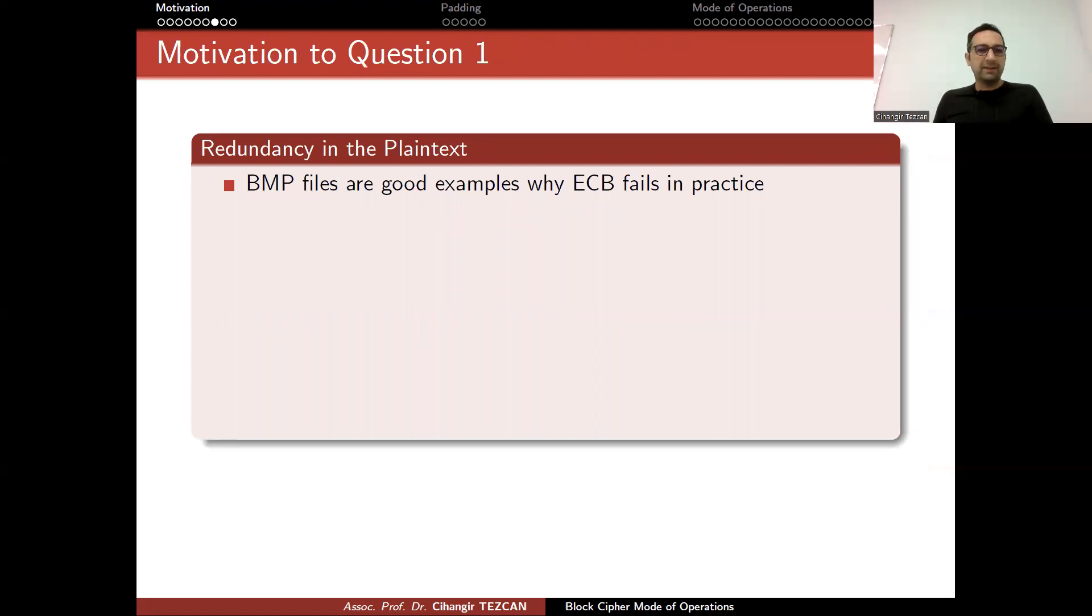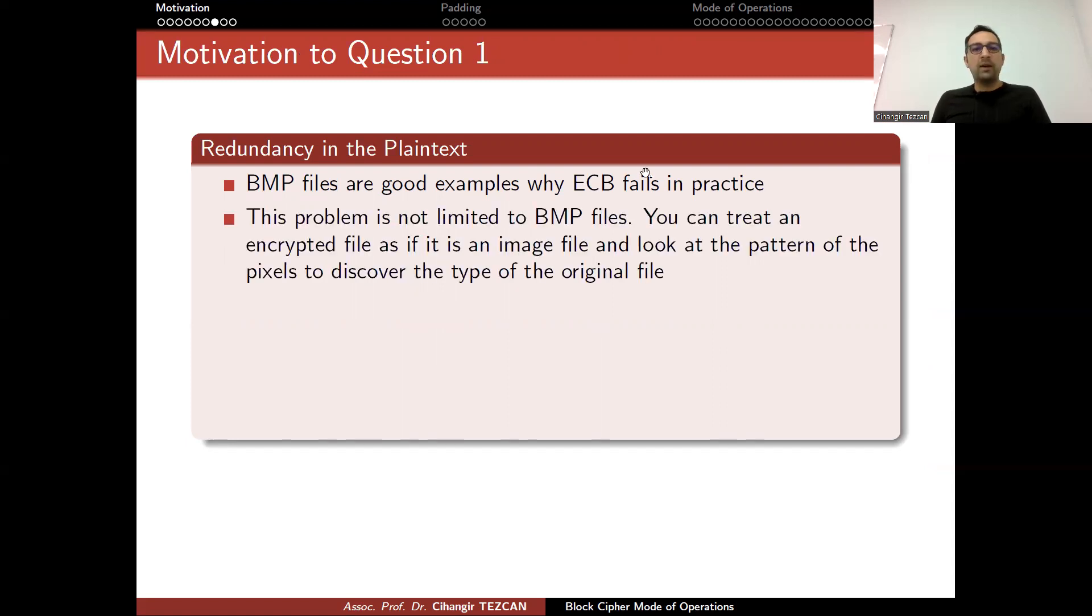So BMP files are good examples why ECB fails in practice. This problem is not limited to BMP files. You can treat an encrypted file as if it is an image file and look at the pattern of the pixels to discover the type of the original file.